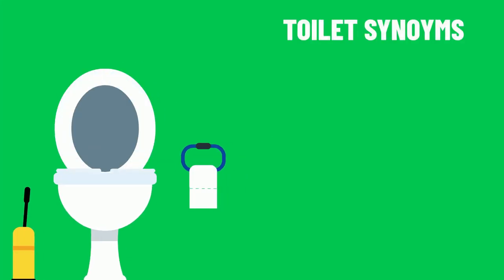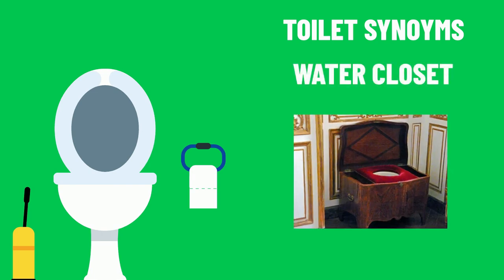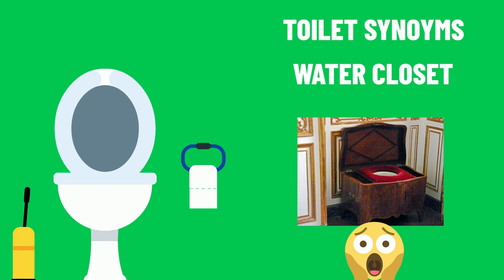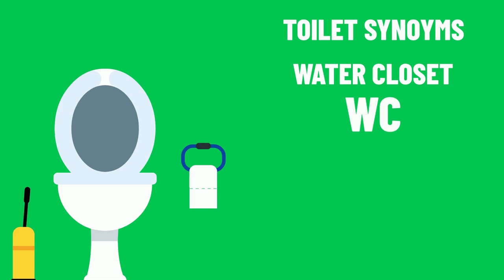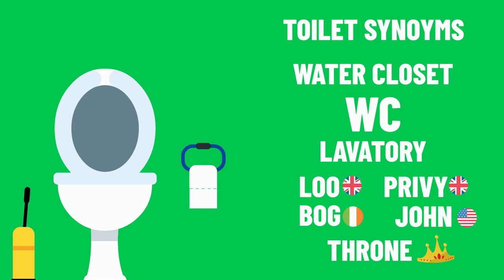There are also lots of interesting synonyms of the word toilet. First up we have 'water closet' — this is actually a Victorian term, and their toilets looked quite like furniture, which explains why it was called a closet and why it's sometimes referred to as WC. 'Lavatory' is another synonym. In British English it is often referred to as 'the loo' or 'the privy'. The slang in Ireland is 'bog', and in American English it is often referred to as 'the john'. In general it can also be referred to as 'the throne'.